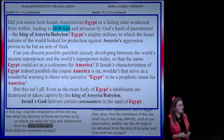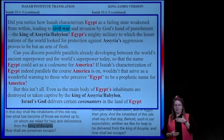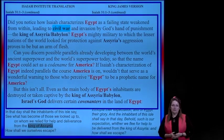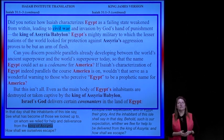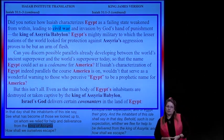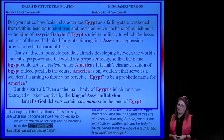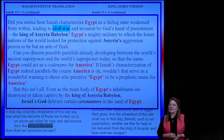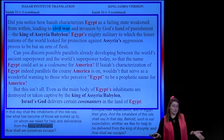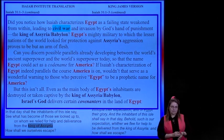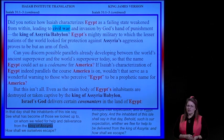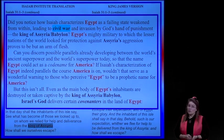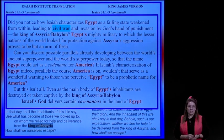Egypt's mighty military—to which the lesser nations of the world looked for protection—proves to be but an arm of flesh. Can you discern possible parallels already developing between the world's ancient superpower and the world's superpower today, so that the name Egypt could act as a code name for America? And if not, then who is it a code name for? But if Isaiah's characterization of Egypt indeed parallels the course America is on, wouldn't that serve as a wonderful warning to those who perceive Egypt to be a prophetic name for America?